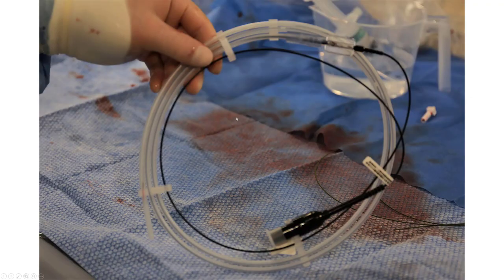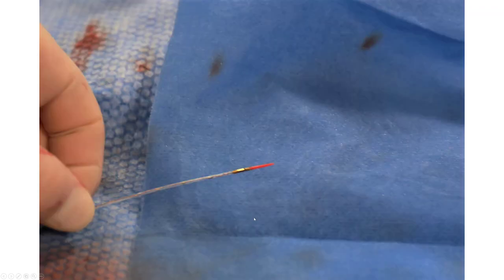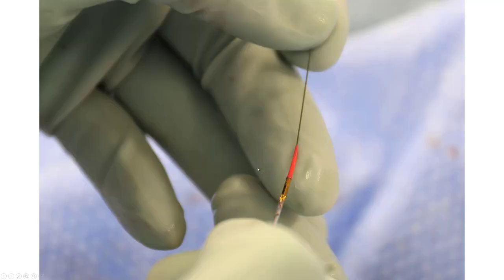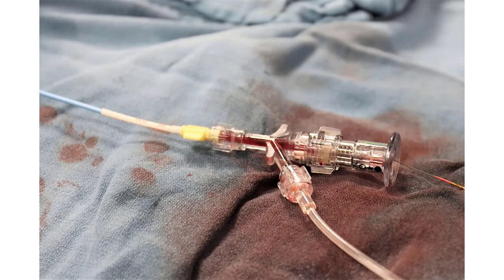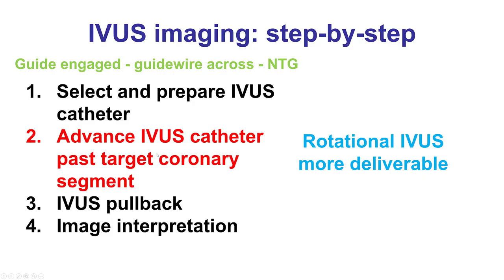This is the Eagle Eye catheter, showing how it looks after it is removed from the package. This is the tip of the catheter that is advanced over the coronary guide wire. There is no preparation of the phased array catheter required. It is advanced through the guide catheter and then across the target lesion.